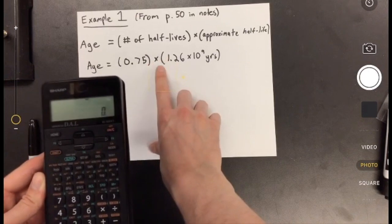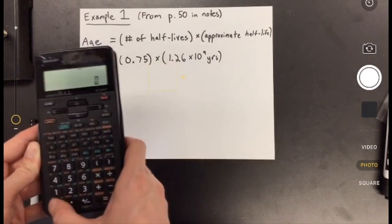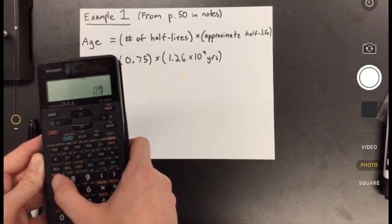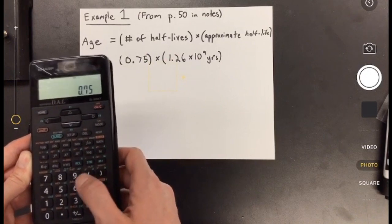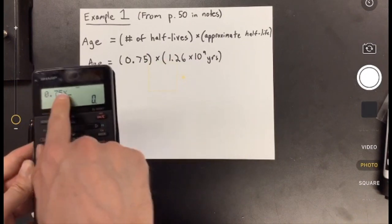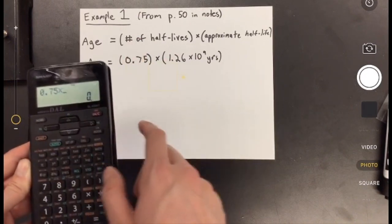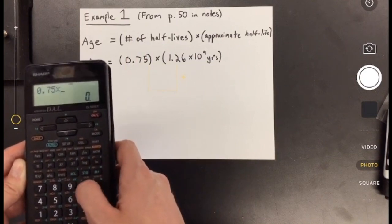So if I'm entering this, I want to do 0.75. Well, no problems there, right? 0.75. Then I'm going to do times. So 0.75 times. If you wanted, you could put that in brackets, but it's going to be okay here. Times.